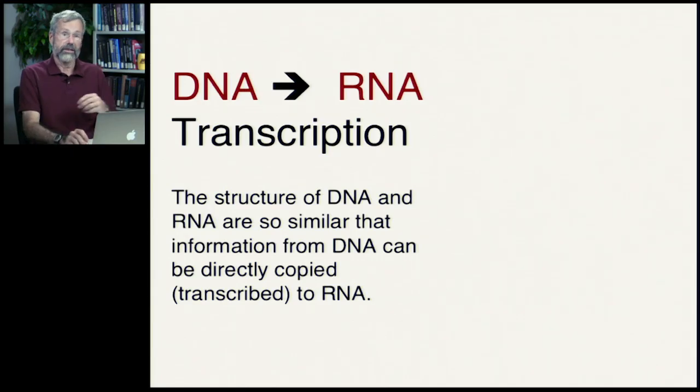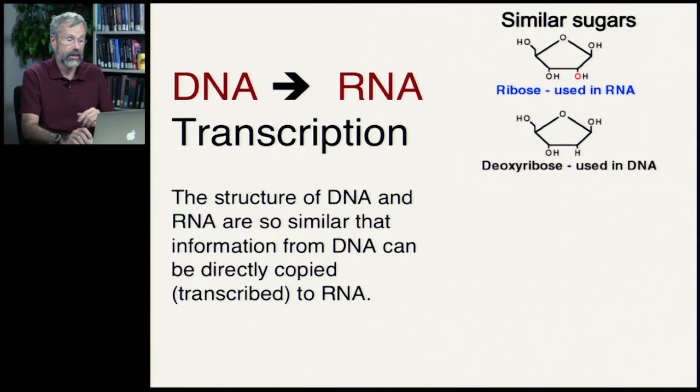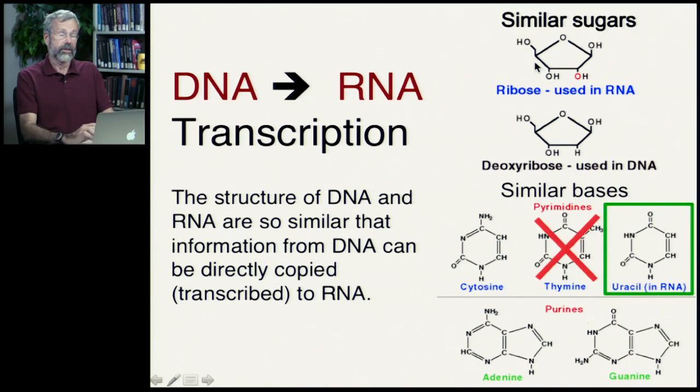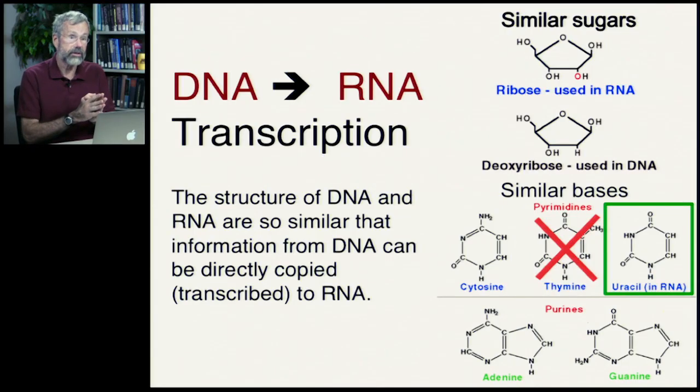DNA is a long series of nucleotides, and so is RNA. The structure of DNA and RNA are so similar that information from the DNA can be directly copied or transcribed over to RNA. So we have a slightly different sugar. Instead of deoxyribose that we saw in DNA, that's the D in DNA, we have ribose. So this is ribonucleic acid. That's the sugar in RNA.